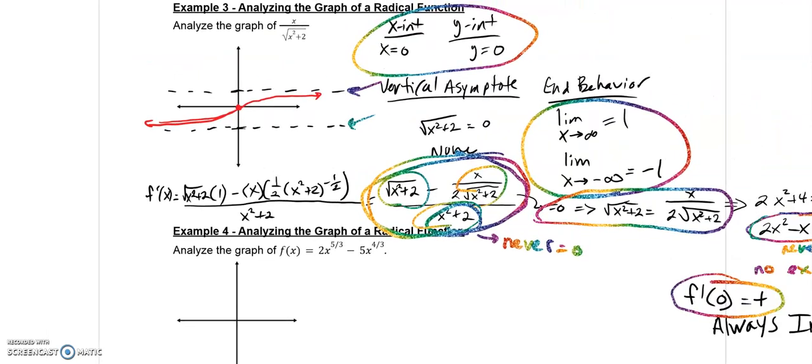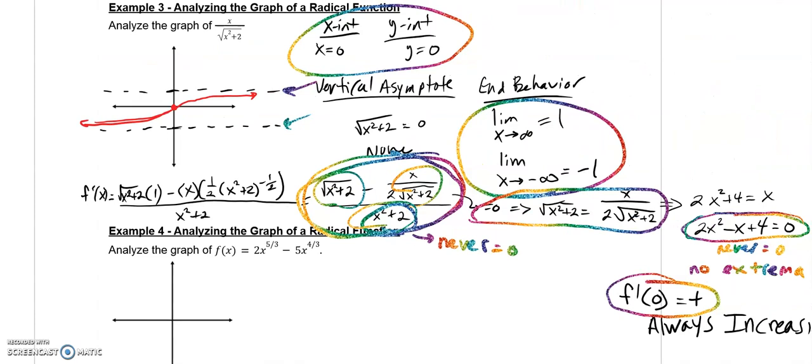So that one was a little trickier because there's just not much to it. But looking at the end behaviors, asymptotes, intercepts, and what the slope is doing, whether it's increasing or decreasing given certain values, that gave us enough of a picture that we can go ahead and sketch that graph.